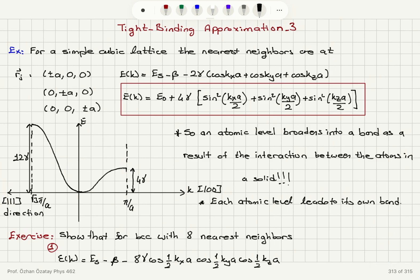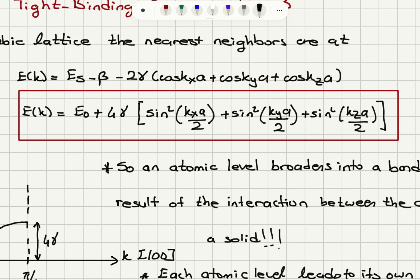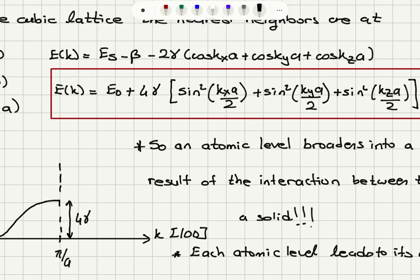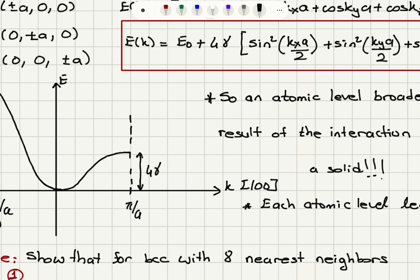This tells us that, for example, if we travel in the 1,0,0 direction, Kx is 1 and Ky and Kz are 0. In the 1,0,0 direction, for Kx equal to π/A, this gives us 1, so that would be E0 plus 4γ. The bandwidth is therefore equal to 4γ in this direction.